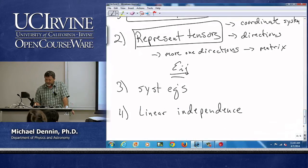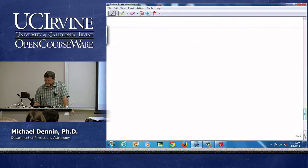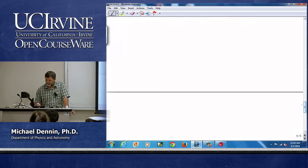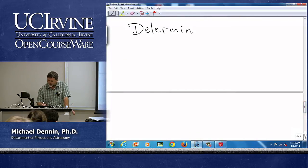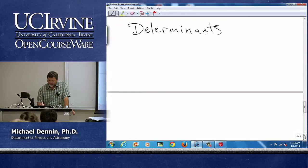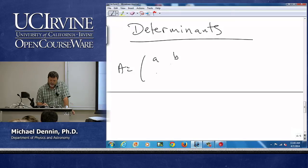And so as a kind of quick example, we're going to show one example of where determinants get used. So just to remind you, or remind me, what is the determinant of a two by two matrix?